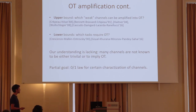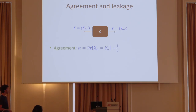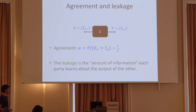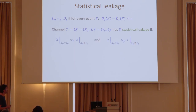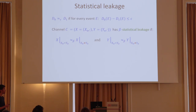We really want to find a 0-1 law or some properties of a channel such that if the channel has them, it can be amplified into OT, and if it doesn't, it is trivial. Natural such properties are agreement and leakage. Agreement is just the probability that Alice and Bob agree — they have the same output. We say a channel has alpha agreement if the probability of agreement is alpha. The leakage is the amount of information each party learns about the output of the other from its view. The usual way to measure leakage is by statistical distance — we say a channel has low statistical leakage if Alice cannot tell from her view whether her and Bob's output bits agree or not.